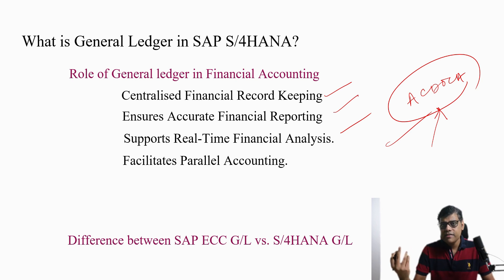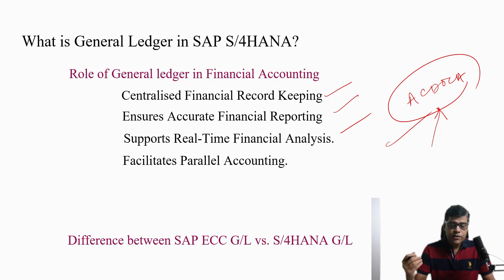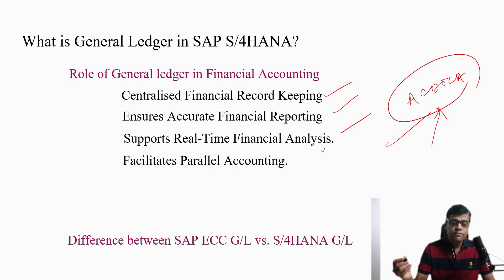You can see in this image how the universal journal contains all types of data — it includes finance, controlling, reconciliation — everything is there in the ACDOCA table. From a financial analysis point of view, it supports real-time financial analysis as well as parallel accounting. Business can now maintain multiple accounting principles.